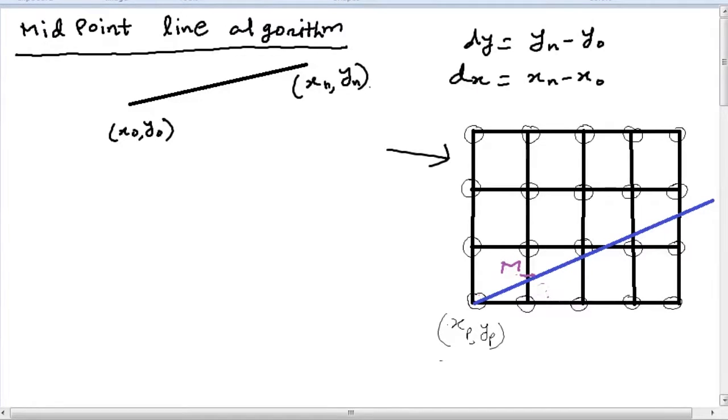Now suppose we've currently chosen a pixel xp, yp and we've glowed this pixel. Let's denote the pixel to the right of it as E or east pixel, and the pixel diagonally upwards as the northeast pixel NE.